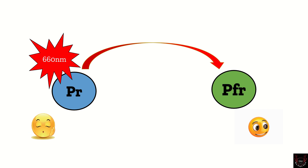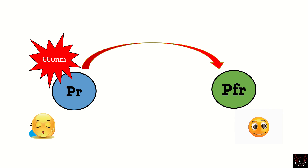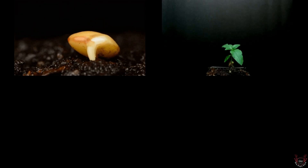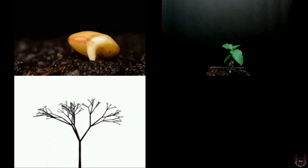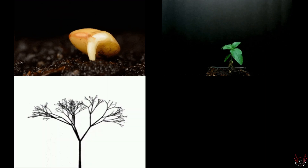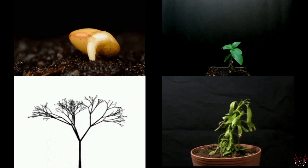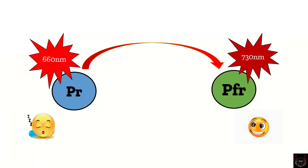This active form of phytochrome, Pfr, plays an important role in major physiological functions like seed germination, leaf elongation, stem and hypocotyl elongation, branching, flowering, etiolation, and senescence.